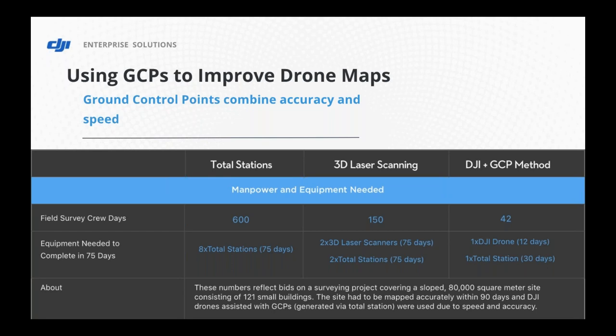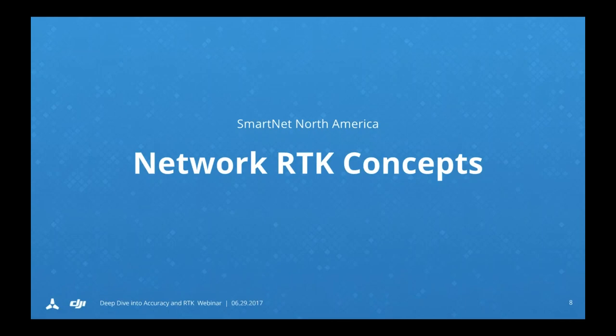Thank you, David. Ground control points are a really well-established way of bringing things into coordinate systems — actually going back to early photogrammetry in the beginning of the 20th century. But technologies get updated. One of the really interesting ways we've been seeing this happen in the market is using network RTK. Overall, what network RTK provides is a way of very highly accurately locating the photos that get into photogrammetry software in order to have a very high-accuracy output. We've seen that with the right inputs, we can have very good outputs with limited or no need for ground control.